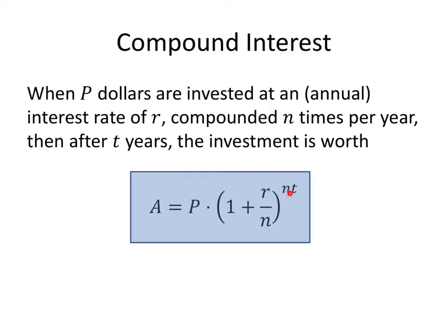Well, if t is the number of years that we invest our money, and n is the number of times per year that we get interest, then n times t is the number of times we get interest. So that's why the exponent is n times t. So this is our formula for compound interest.